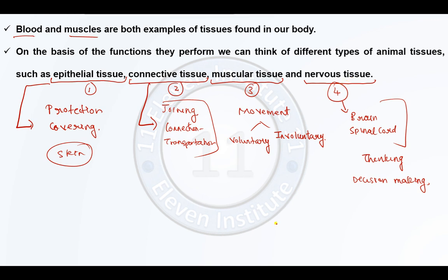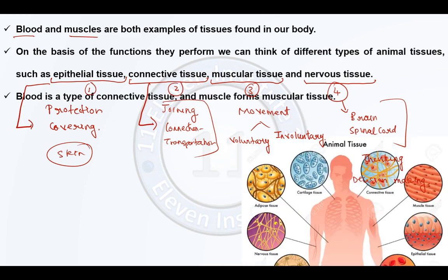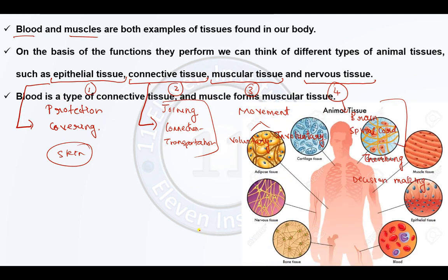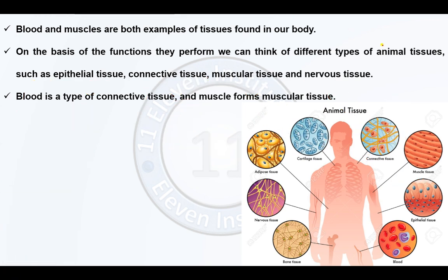Now let us see the classification of animal tissues and where these tissues are located. We can see muscles, epithelial tissue, blood, bone tissue, nervous tissue, adipose tissue (fat tissue), and cartilage — these are the different examples of animal tissue that we are going to discuss in detail.